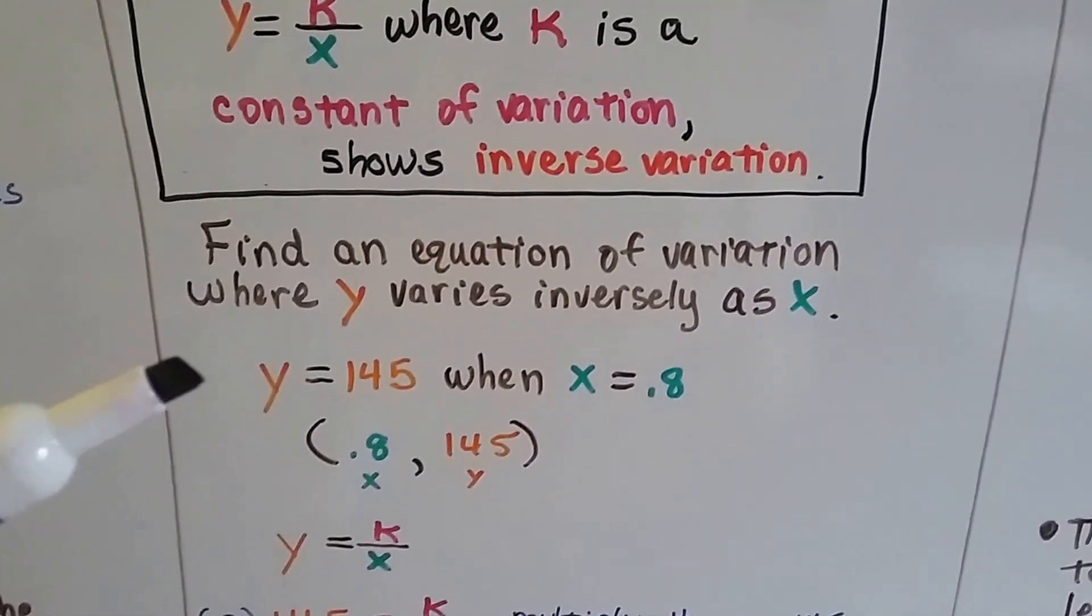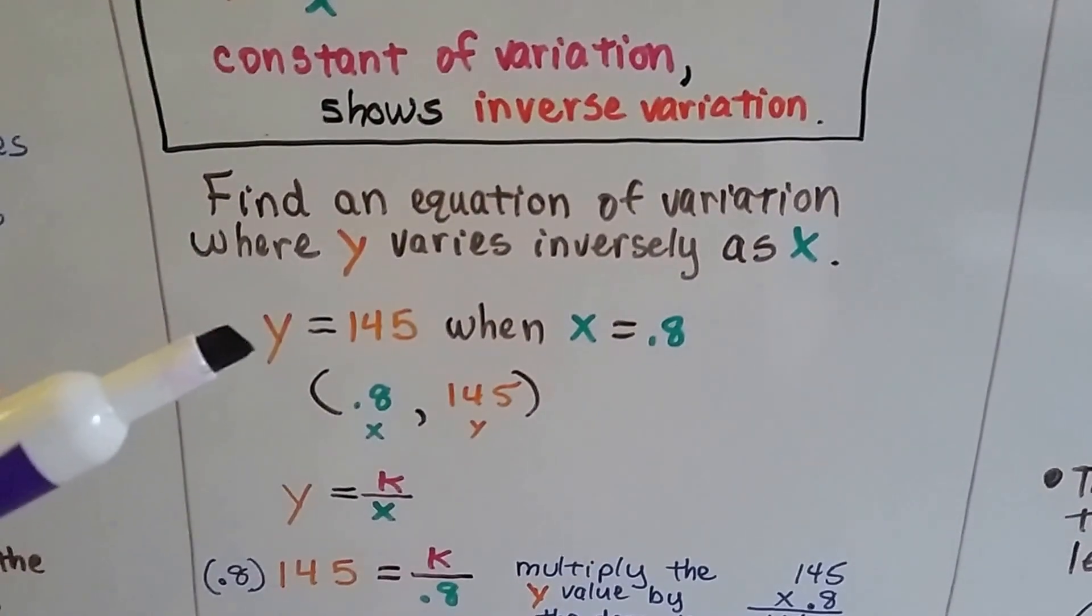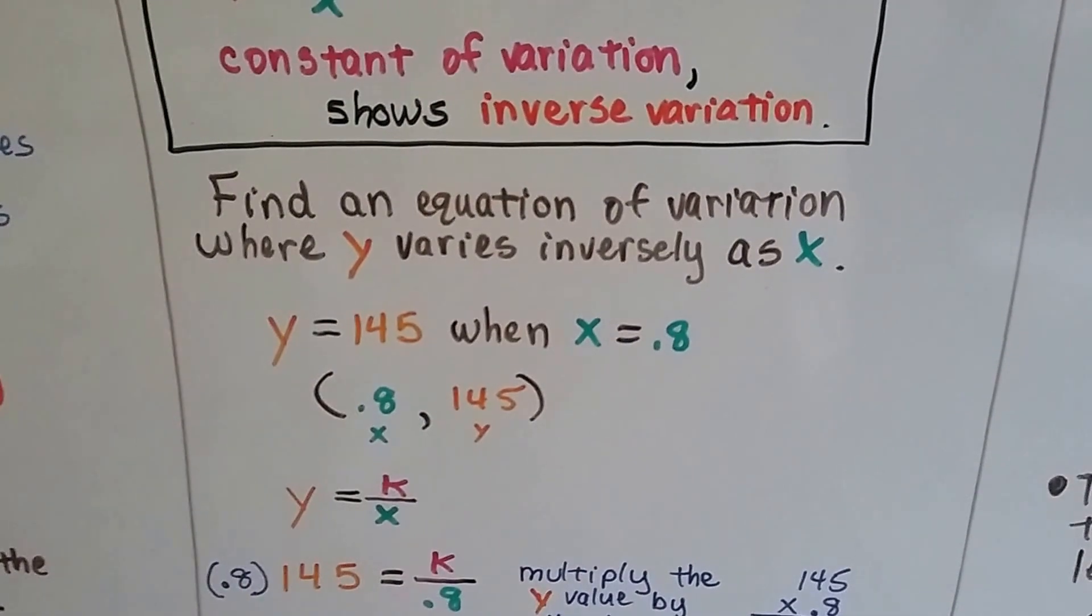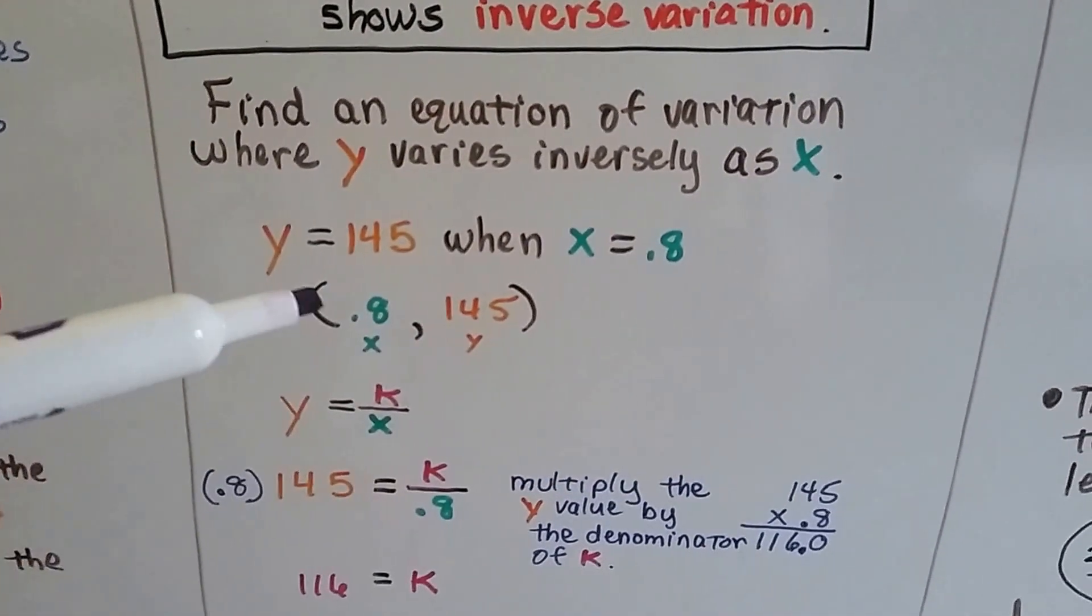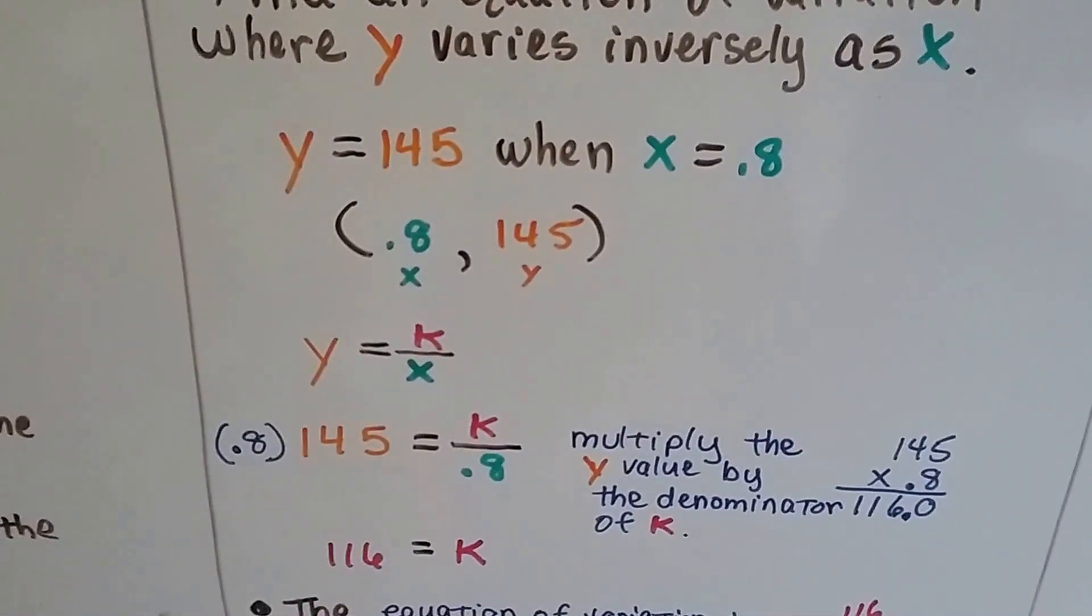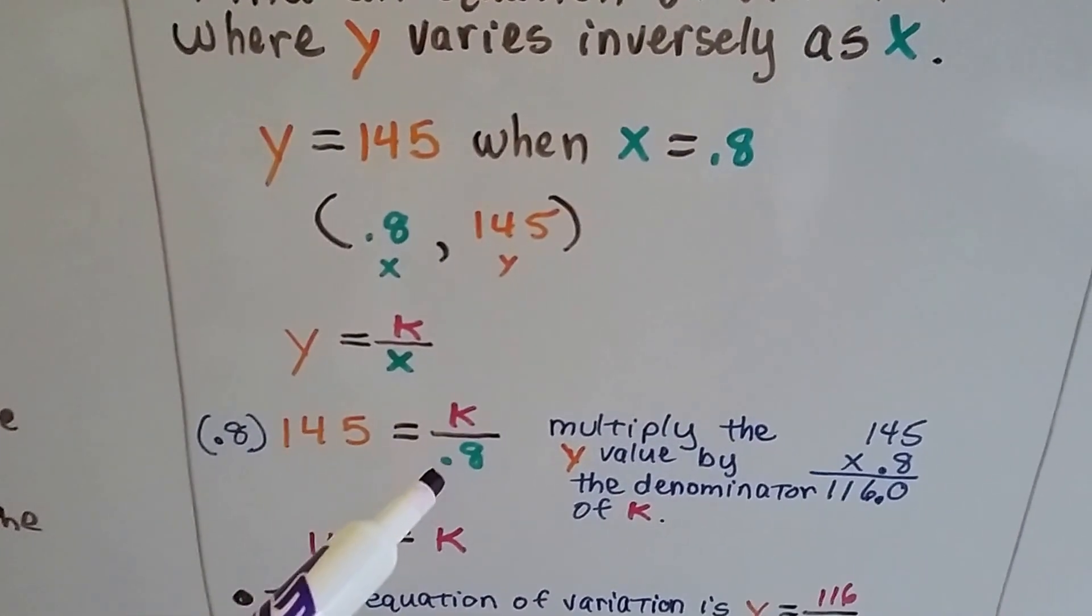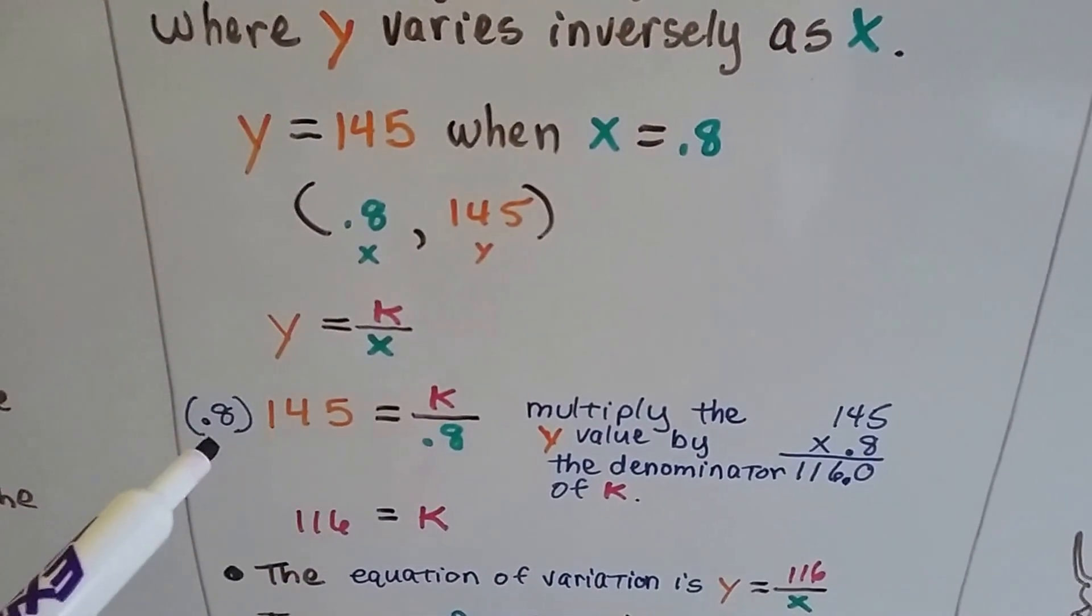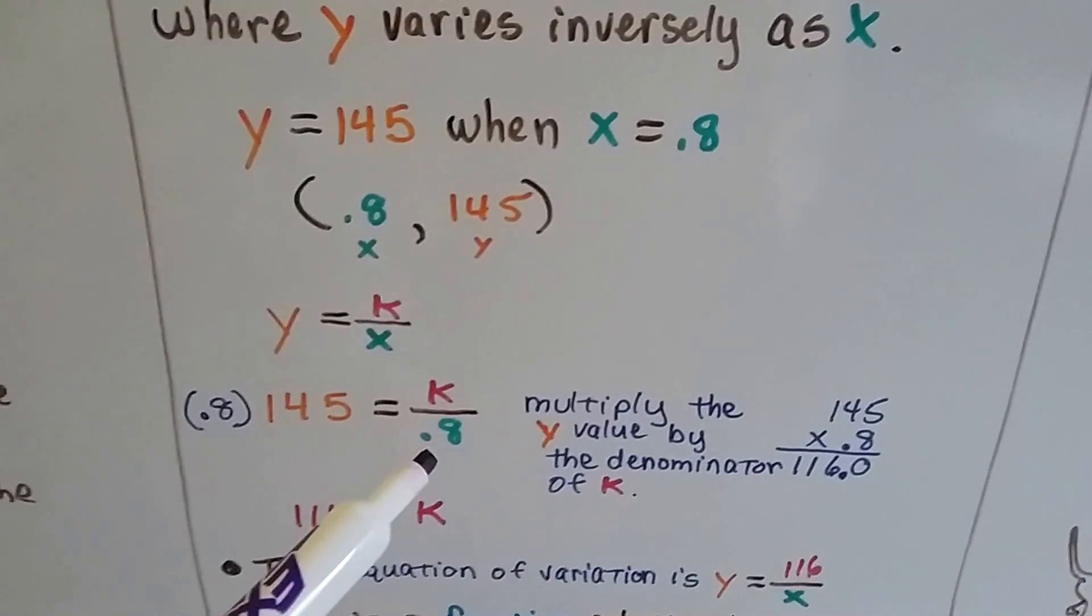To find an equation of variation where y varies inversely as x, if we're given y equals 145 when x equals 8 tenths, we have our xy values, our ordered pair, and we can plug it into this equation. So we get 145 equals k over 8 tenths, k divided by 8 tenths.